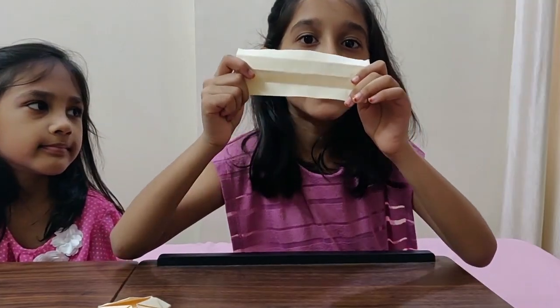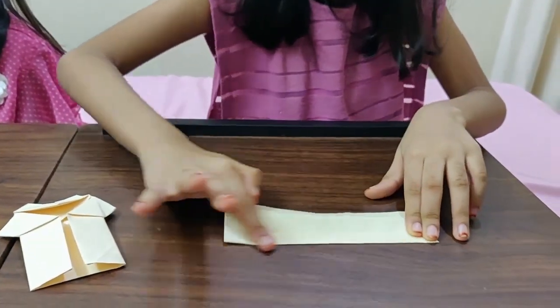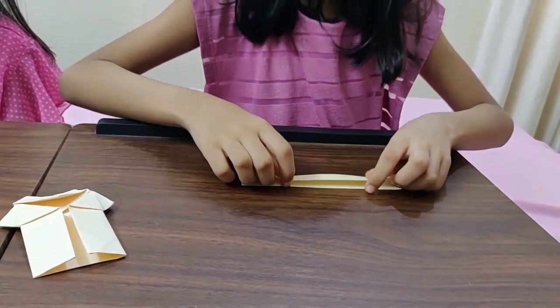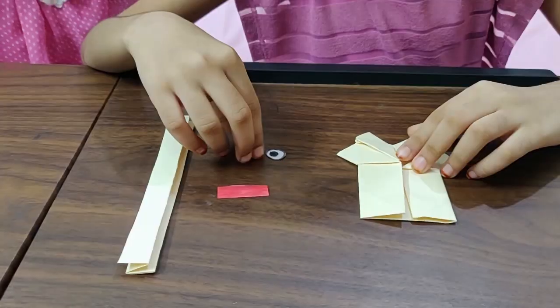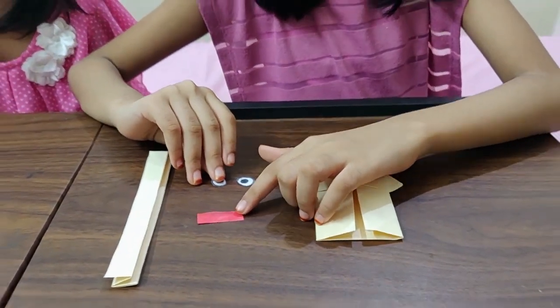Take a rectangular paper and fold it like this to make a stick. Now I am pasting eyes and tongue to the frog.